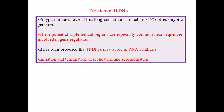Potential triple helical regions are especially common near sequences involved in gene regulation. It has been proposed that H-DNA plays a role in RNA synthesis as well, though more research is needed. H-DNA is found largely in common places where sequences are involved in gene regulation, most importantly in eukaryotic cells. H-DNA can also be found at the initiation and termination points of replication and during recombination.